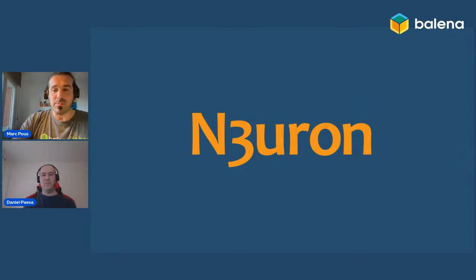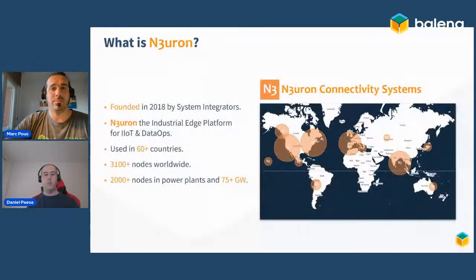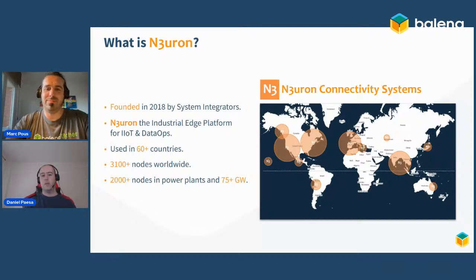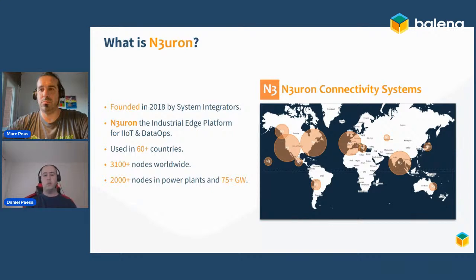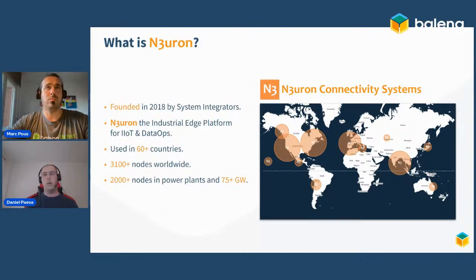Neuron is a software development company based in Spain, though our team is located worldwide. Neuron was founded in 2018 by system integrators after identifying the growing need to break down operational data silos and make use of this data on the plant floor to enhance productivity and decision making. Our flagship product is Neuron, an all-in-one industrial software IoT and data ops solution, present in over 60 countries with over 3,000 nodes.